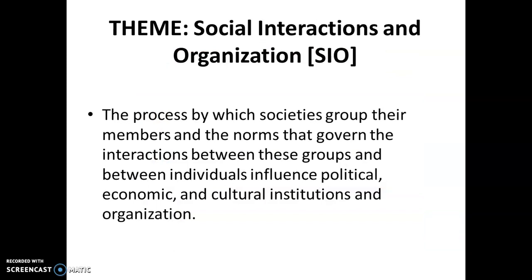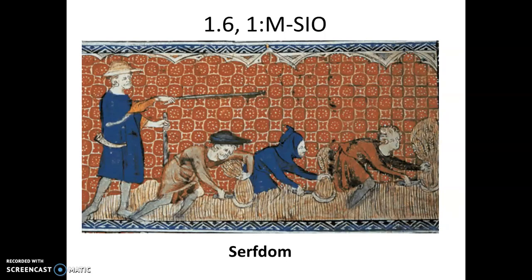When we look at social interactions and organization — how societies group their members and establish norms — the only place this is explicitly mentioned in Unit 1 is medieval Europe. Europe was largely an agricultural society dependent on free and coerced labor, including serfdom. Serfs are at the bottom of feudal society, more or less tied to the land — they know it, they work it, but it's not their land and they cannot leave without their master's permission. This is definitely not a form of free labor.